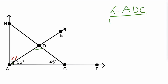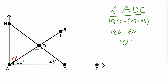So what I'm going to do is take 180, and since we know two of the other angles, I'm going to take 180 minus the sum of 35 and 45. So it's 180 minus 80, and that's going to give me 100 degrees — that's the measure of angle ADC.